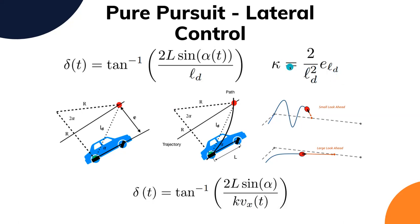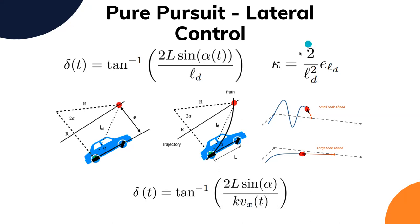If you have a large look-ahead distance, the arc formed is very lazy — fine for slow speed. However, if you have a small look-ahead distance, the arc will be very steep. The term 2/LD² is described as a proportional gain. This is tunable but certainly depends on the look-ahead distance chosen.